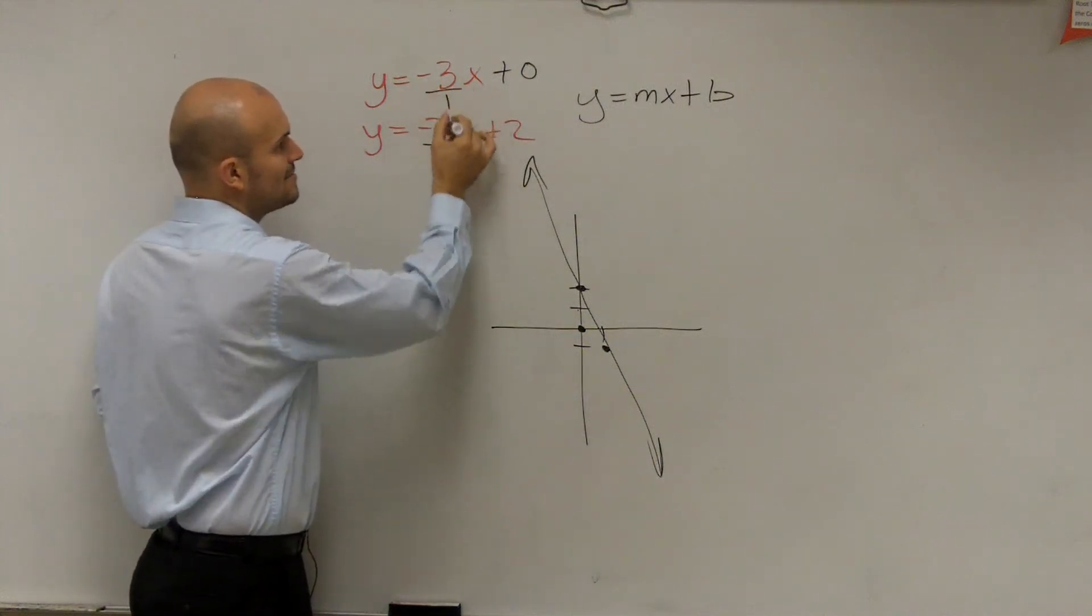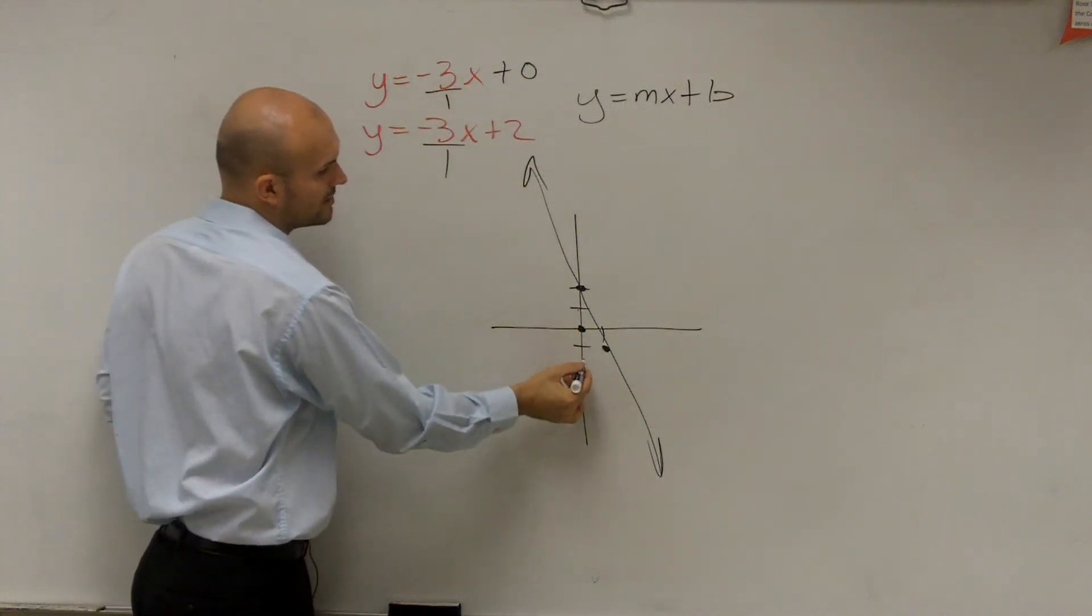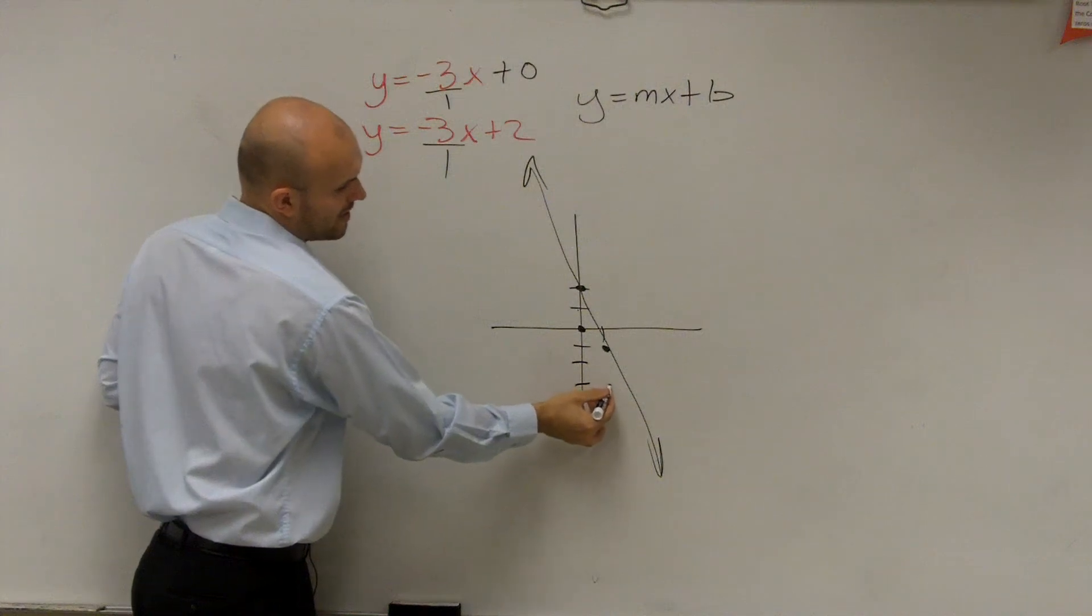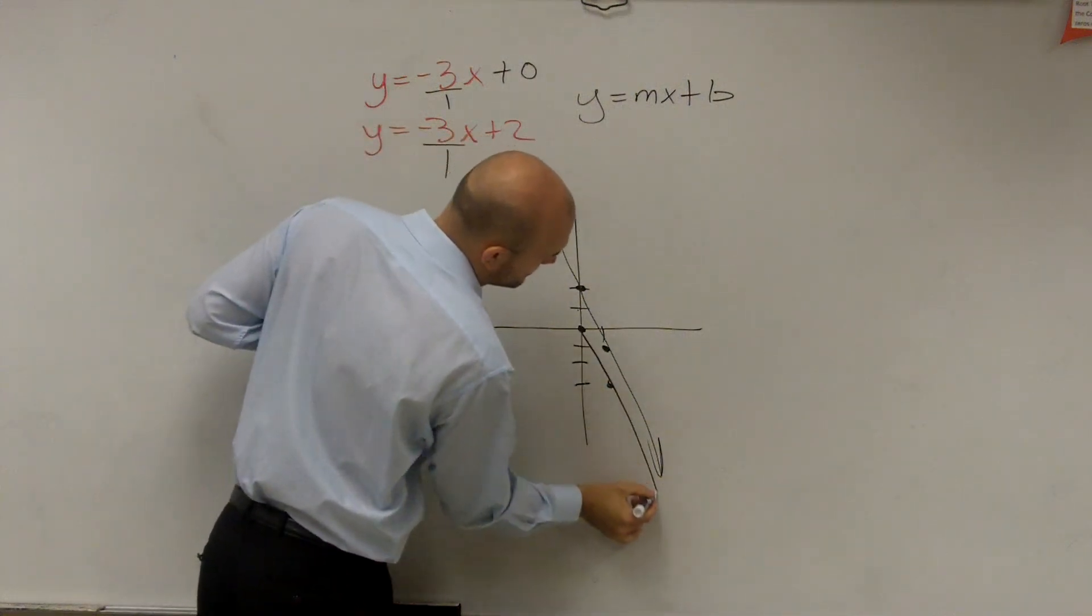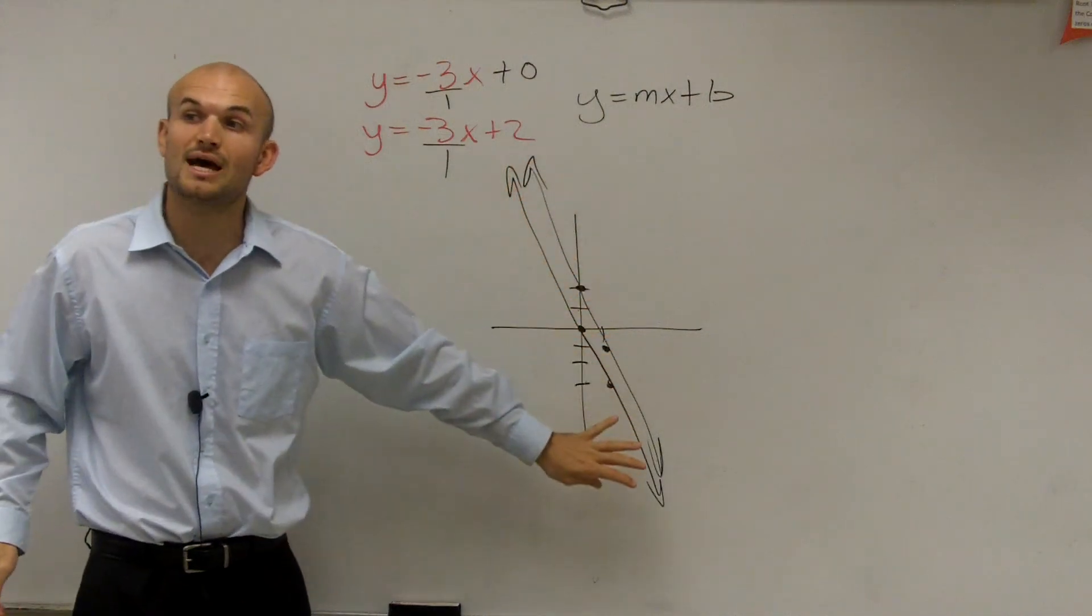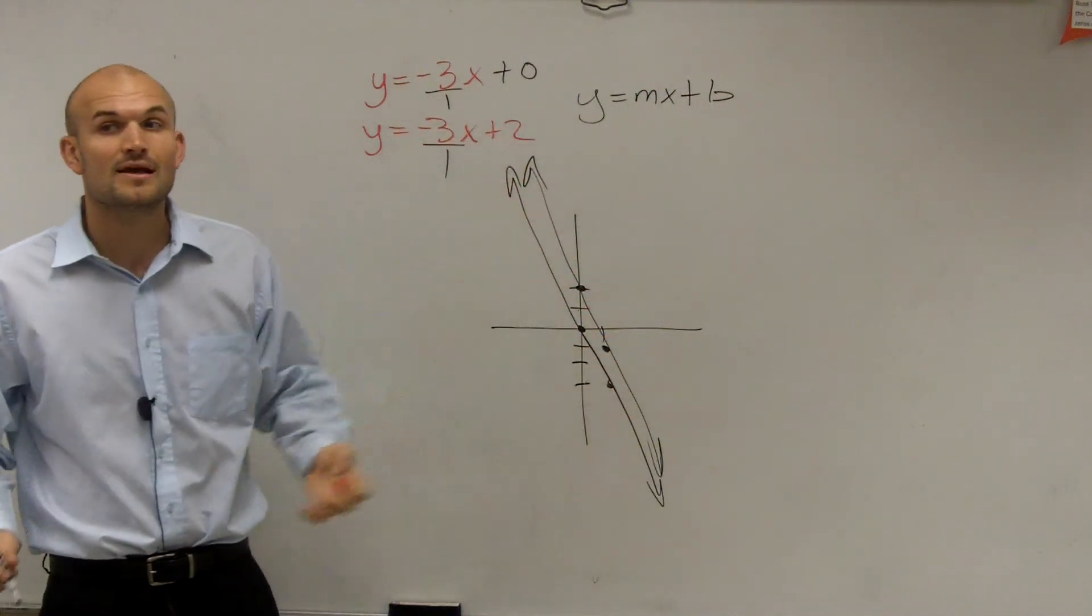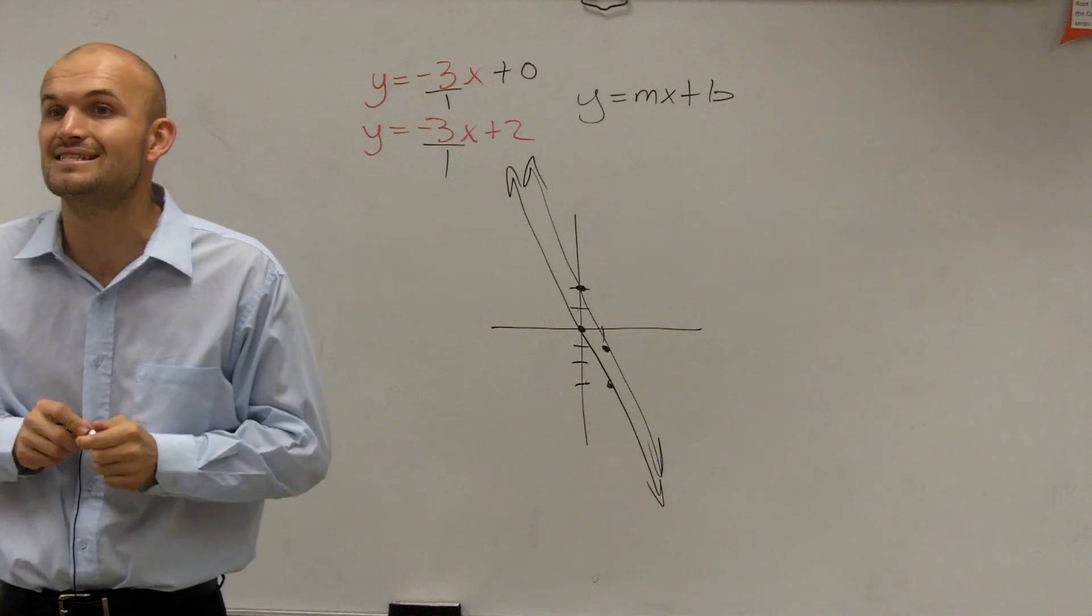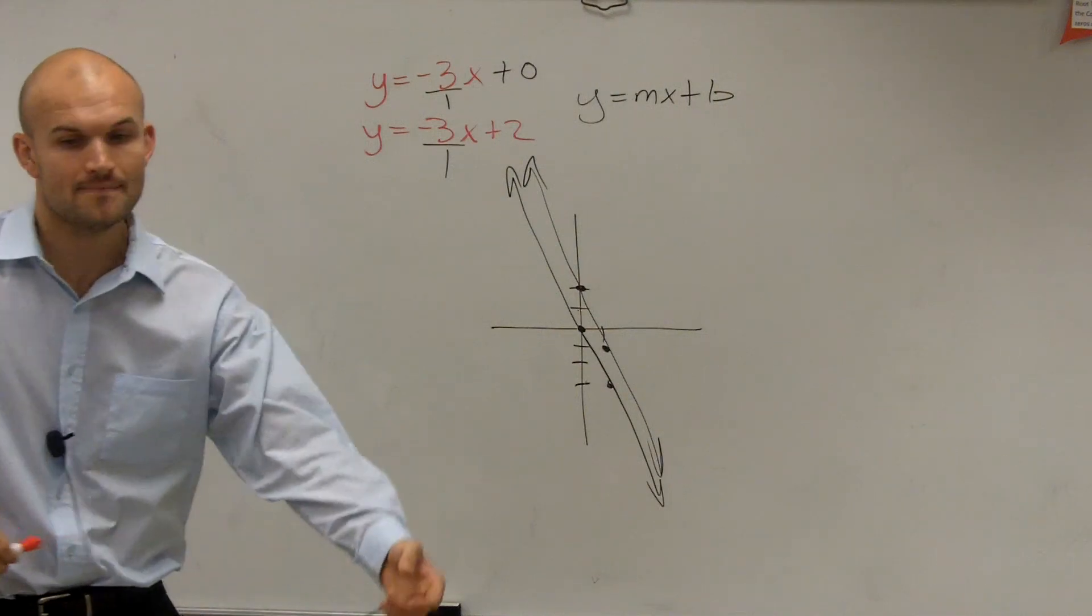Again, it has the same slope, which would be down 3, 1, 2, 3, to the right 1. Now, I'm not the best artist in the world, but you guys can see these are going to create parallel lines because their slopes are the same. Therefore, we're going to have an inconsistent solution. OK? Thanks.